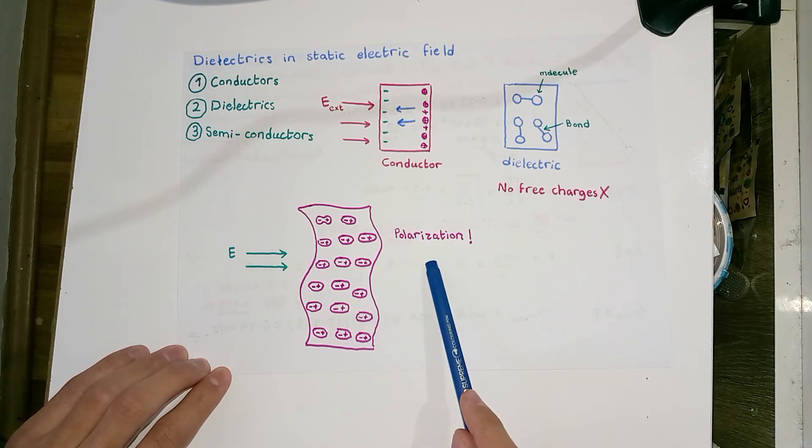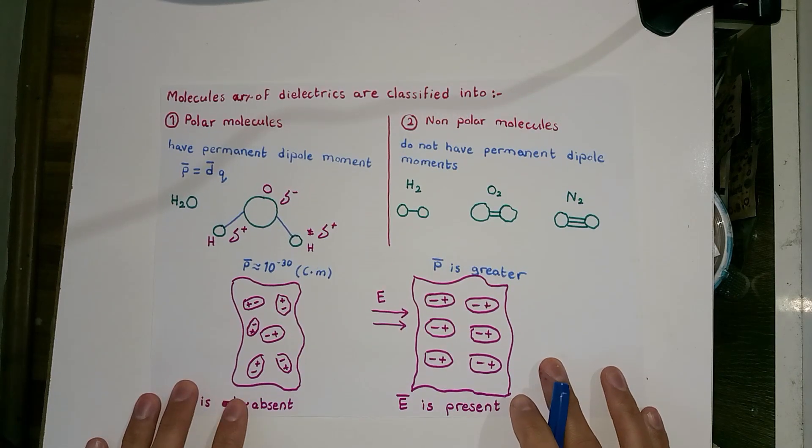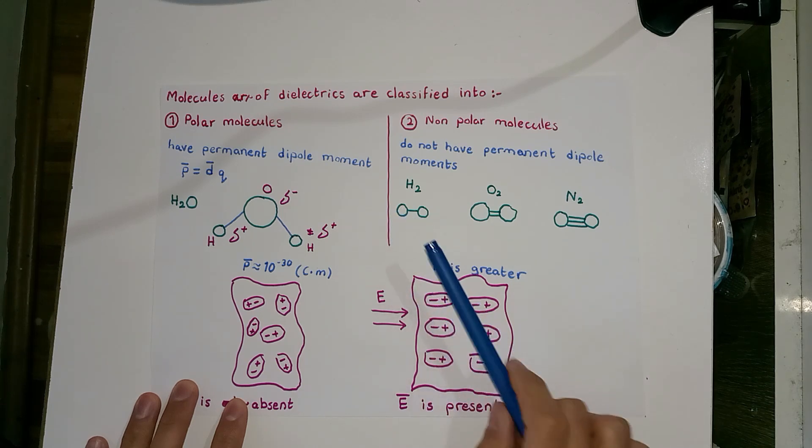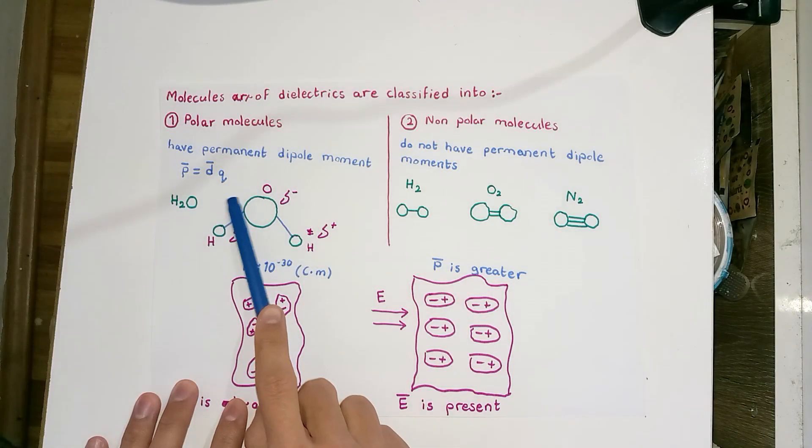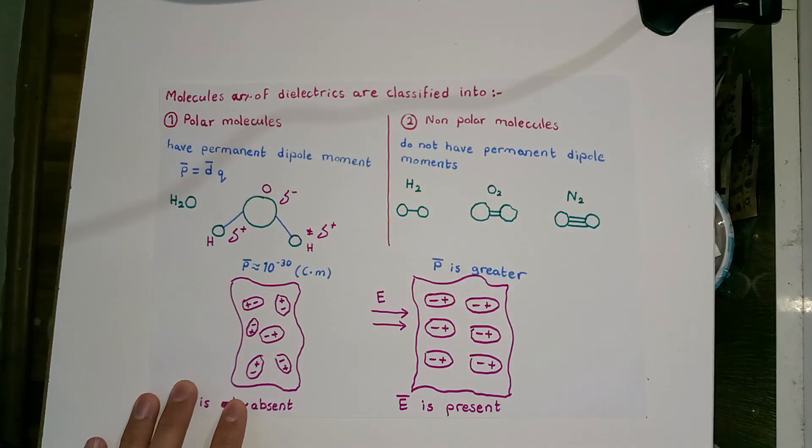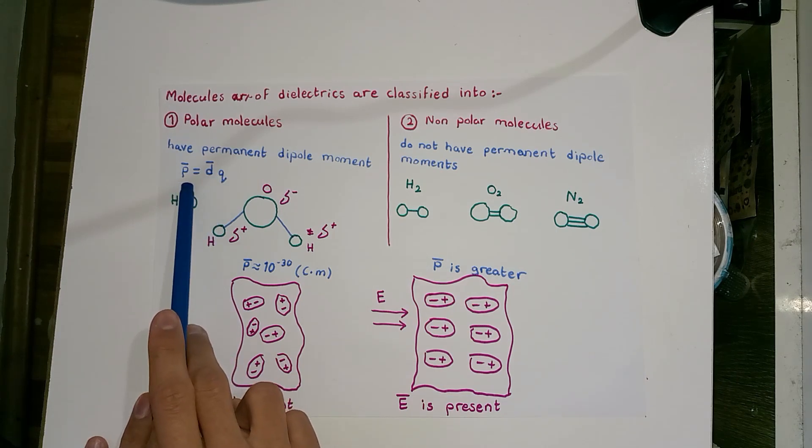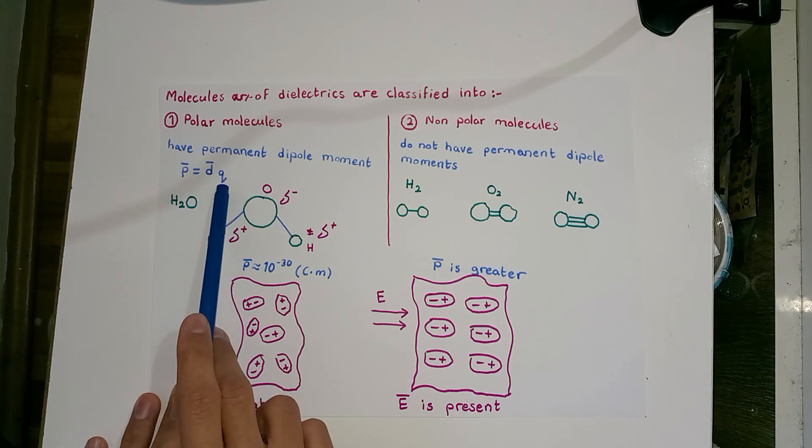In some dielectrics, the molecules are naturally dipoles even in the absence of an external electric field. Namely, some dielectrics have permanent dipole moments. The dipole moment is represented by this equation: P equals the product between d and q, where d is the distance between the two charges of the dipole and q is the magnitude of the charge.